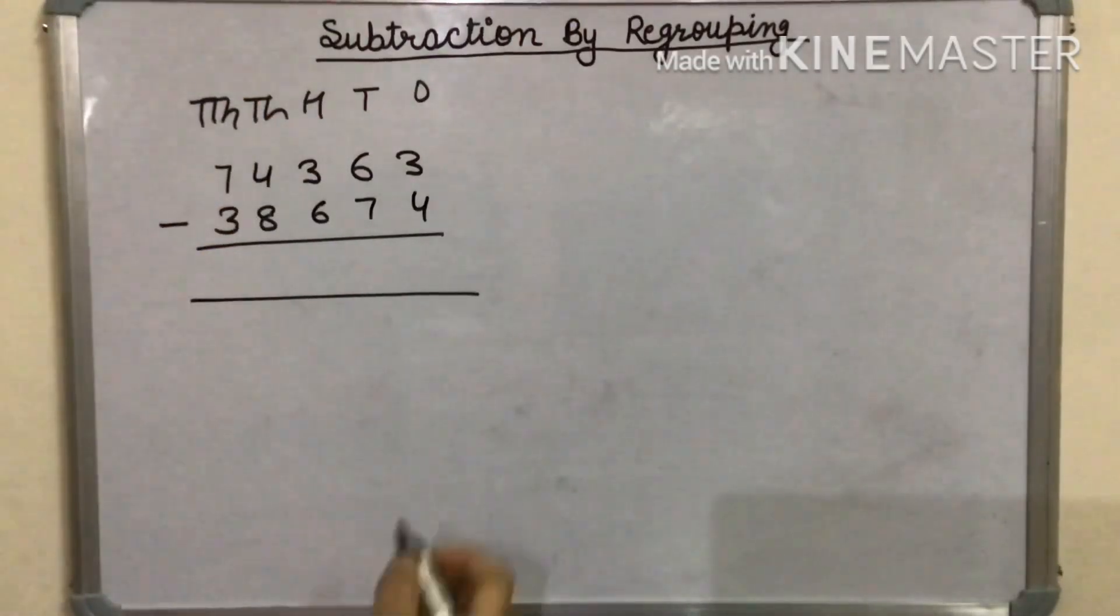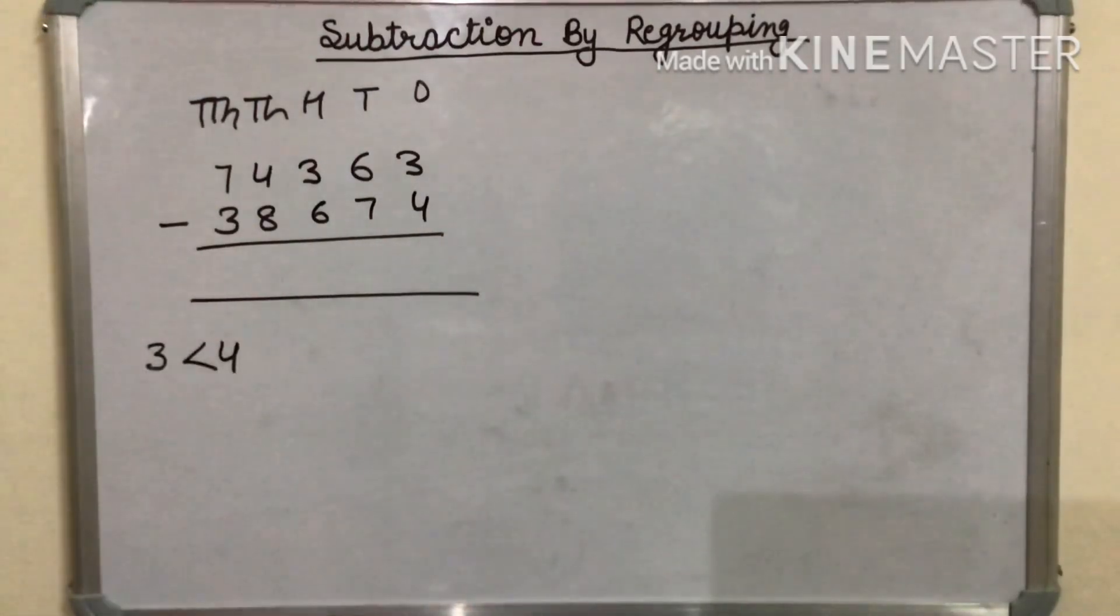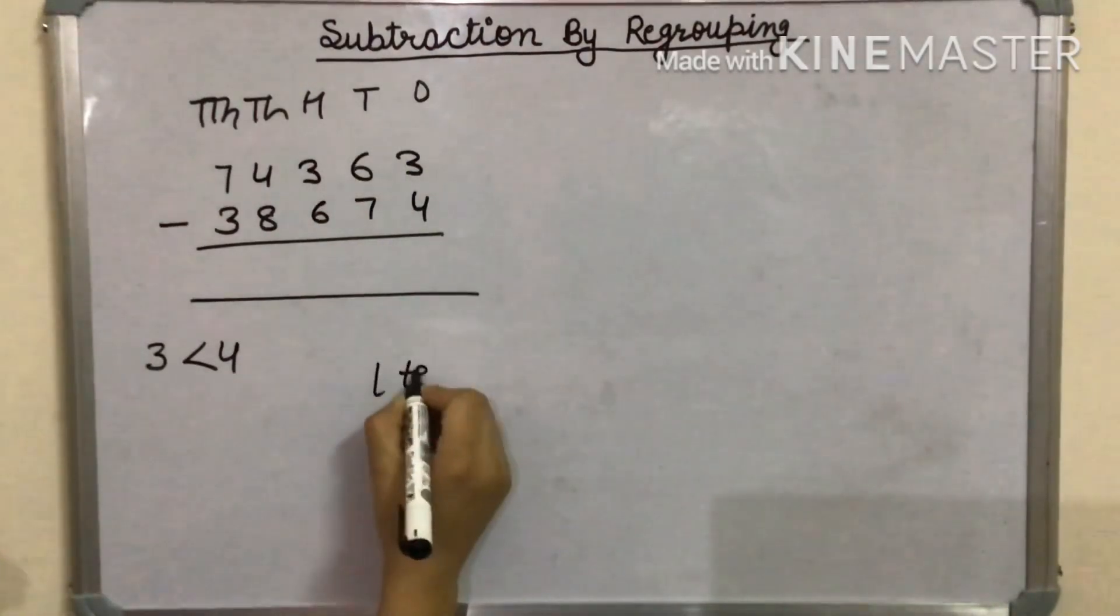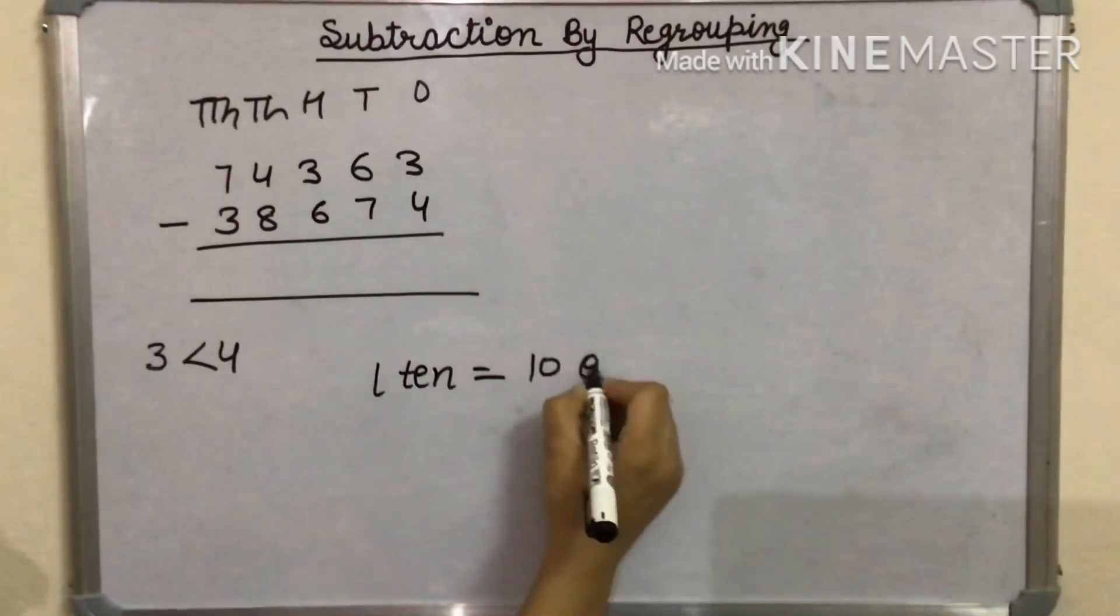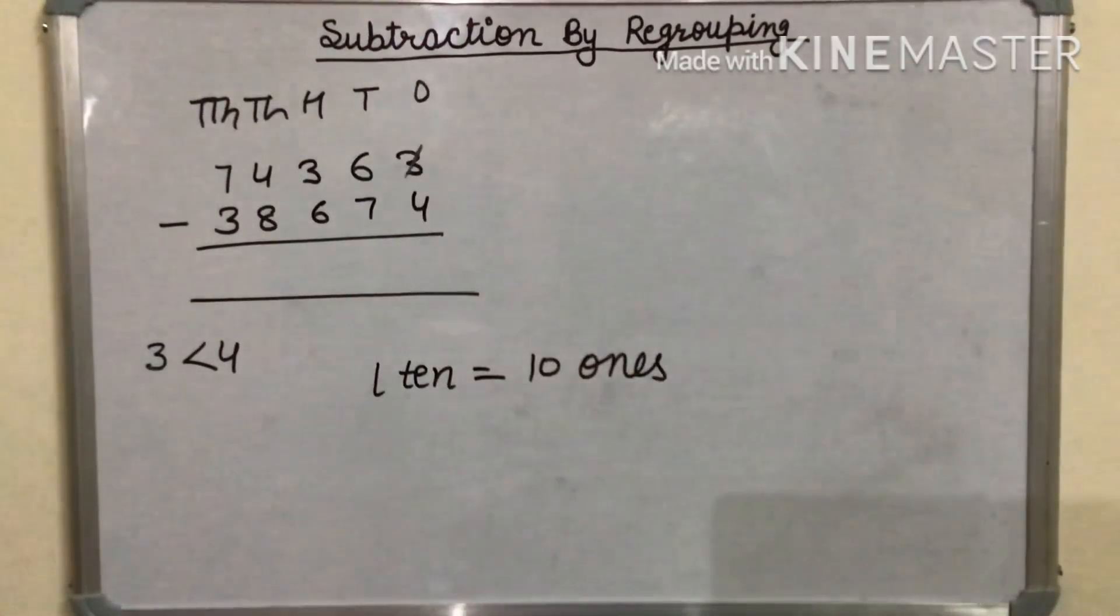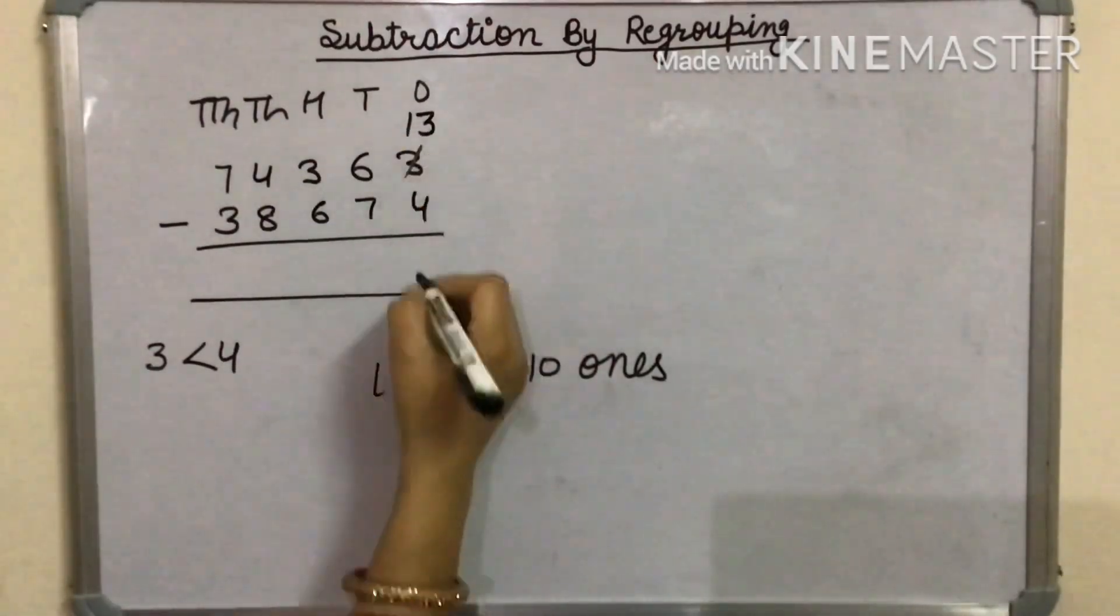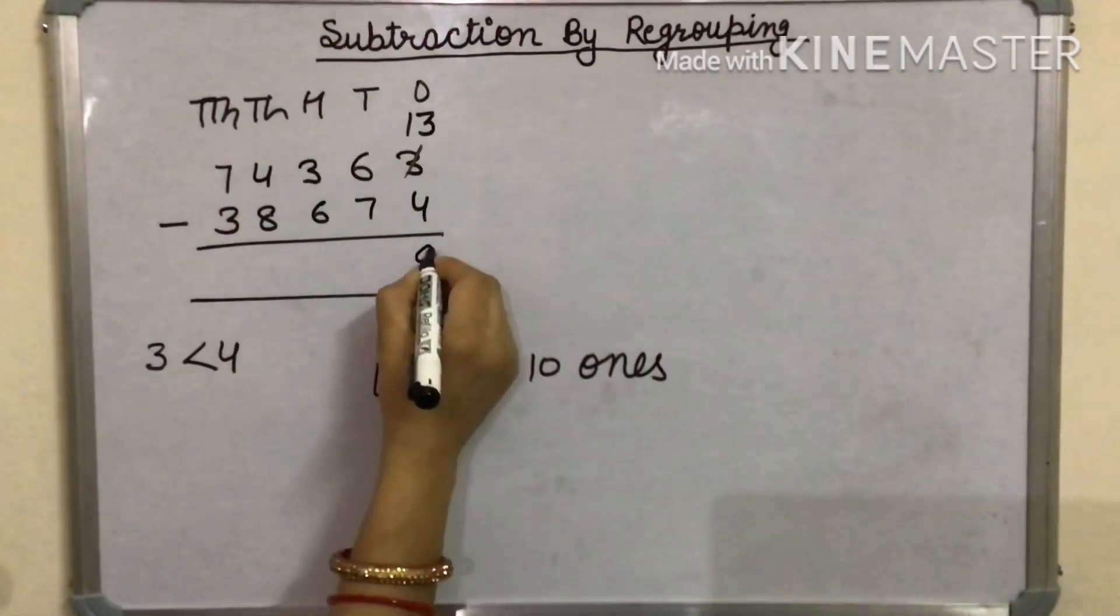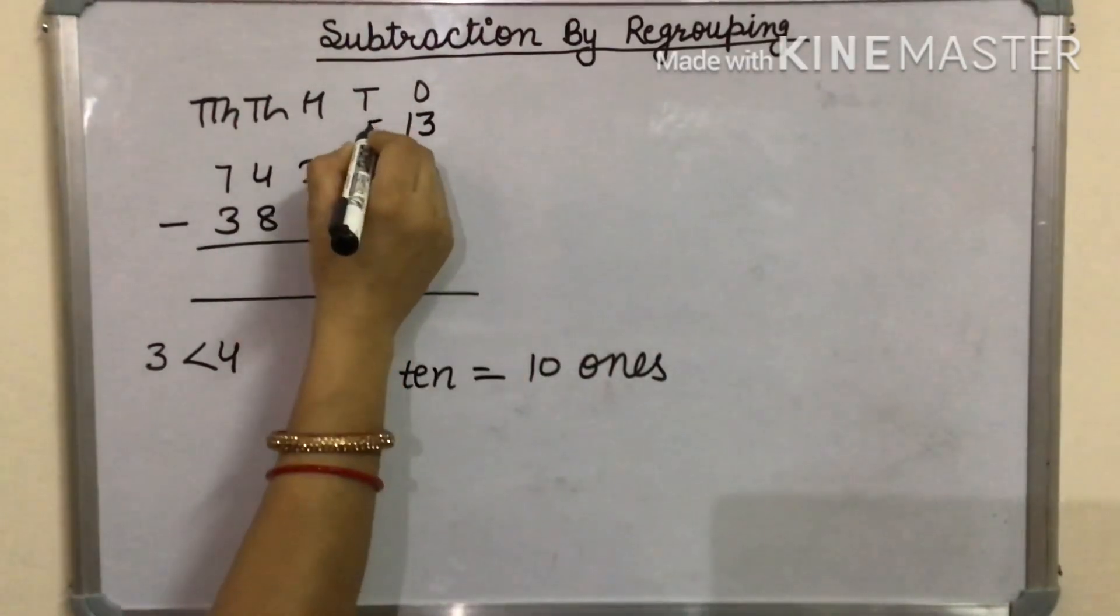We will subtract the 1s digit as 3 is less than 4, so we will borrow 1 ten. 1 ten is equal to 10 ones. So, at the 1s place, it will be 13. 13 minus 4 is 9. At the 10s place, it remains 5.